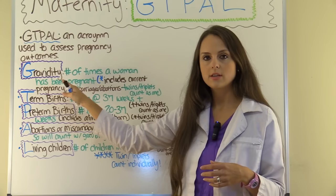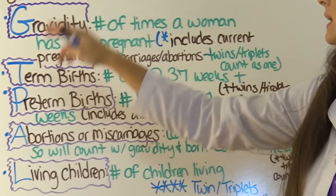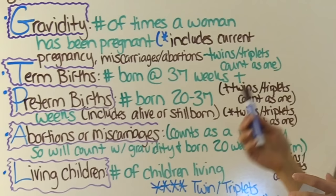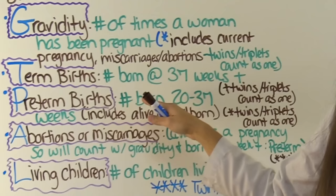T stands for term birth — this is the number of children born at 37 weeks or beyond. Again, twins and triplets count as one. P stands for preterm birth — this is the number of children born at 20 to 37 weeks.